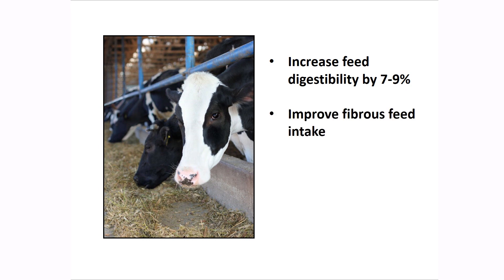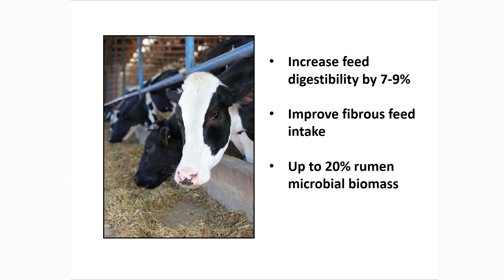This significant impact is perhaps not surprising when we consider that anaerobic fungi represent up to 20% of the rumen microbial biomass and are the most potent fibre-degrading organisms in the known biological world.